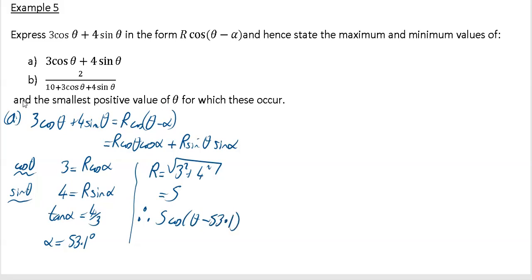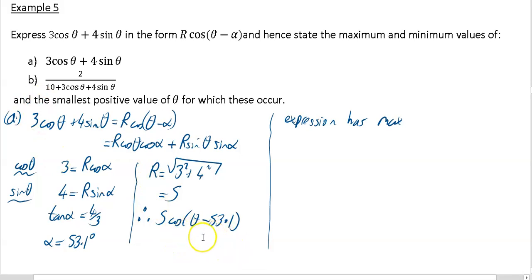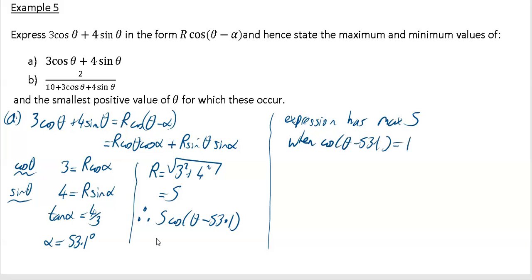It says find its maximum and minimum values. The maximum value occurs whenever cos(θ - 53.1°) = 1, so the maximum value is 5 × 1 = 5. That happens when θ - 53.1° = 0°, i.e. θ = 53.1°.